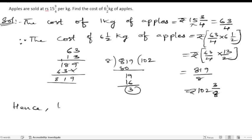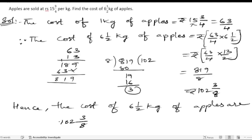Hence, the cost of 6 and half kg of apples are 102 and 3 by 8 rupees. Rupees 102 and 3 by 8.